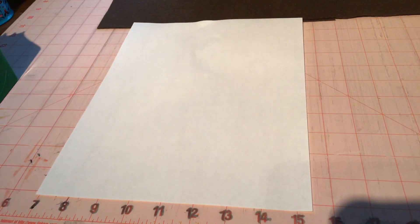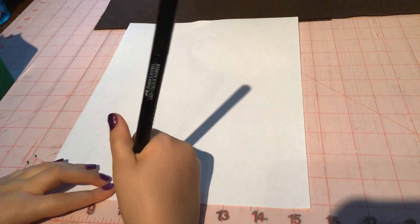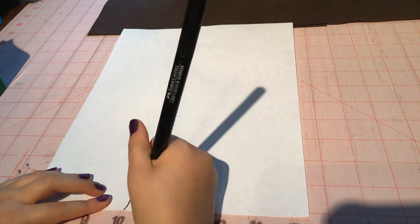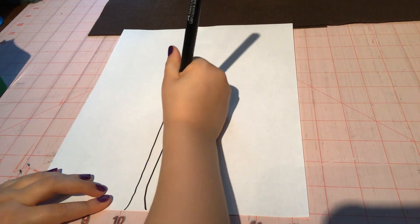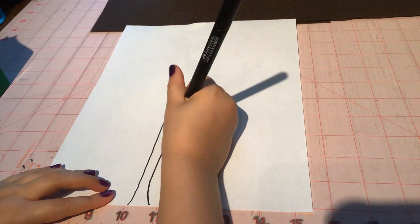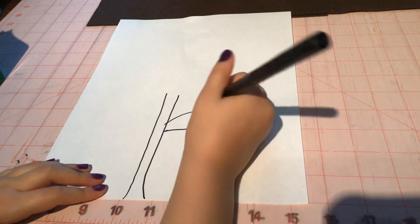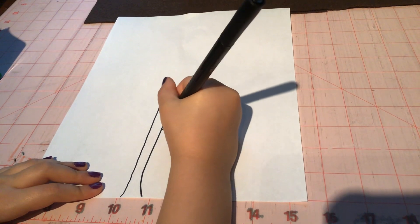So this is how you draw a sunflower. First you make a line and then you make another one next to it. You want to make one petal as a circle. Make a little line through it.